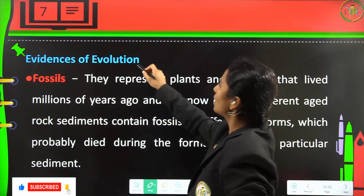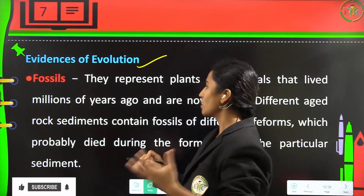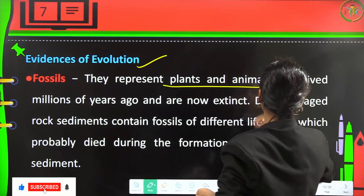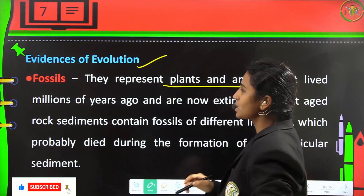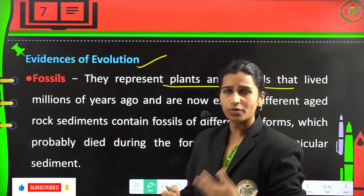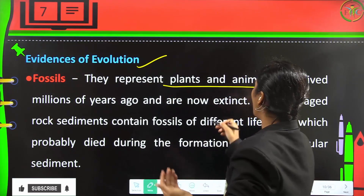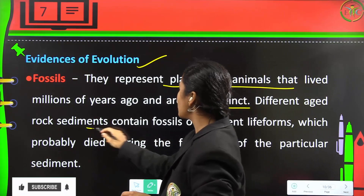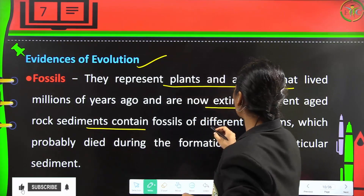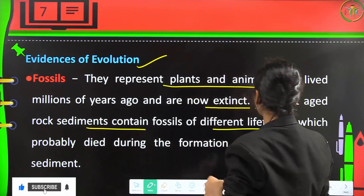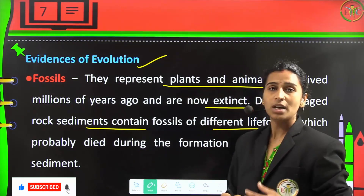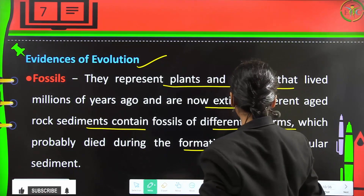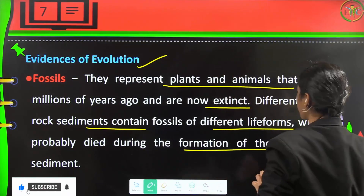Evidences of evolution include fossils, which represent plants and animals that lived millions of years ago and are now extinct. Different age rock sediments contain fossils of different life forms, which probably died during the formation of that particular sediment.